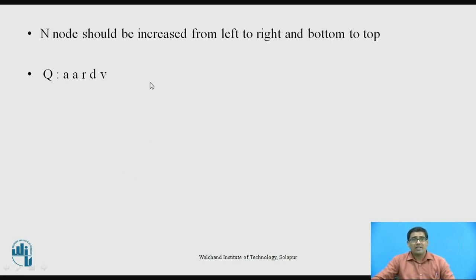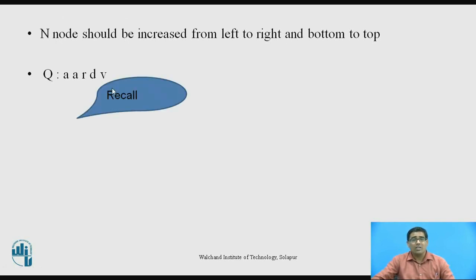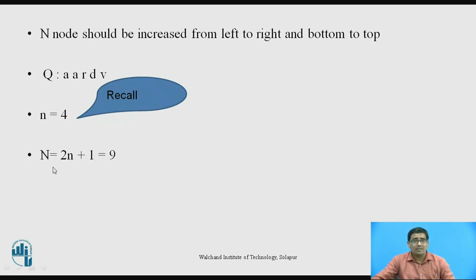Node numbers should increase from left to right and bottom to top — this is the rule for nodes. Now consider the example A, A, R, D, V. Here N equals 4: the double A is counted as 1 symbol, R is 2nd, D is 3rd, V is 4th. Therefore N equals 4. Putting this value into the formula: capital N equals 2N plus 1, which becomes 9.